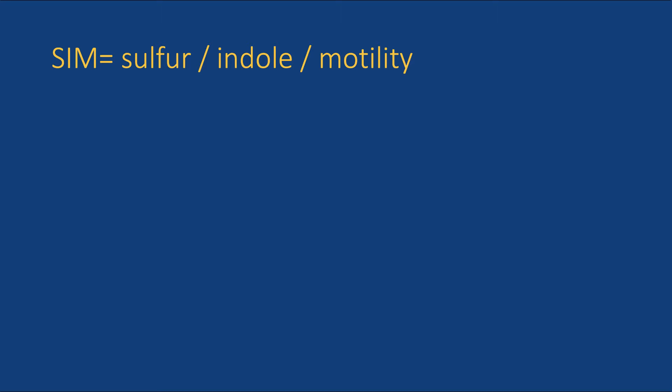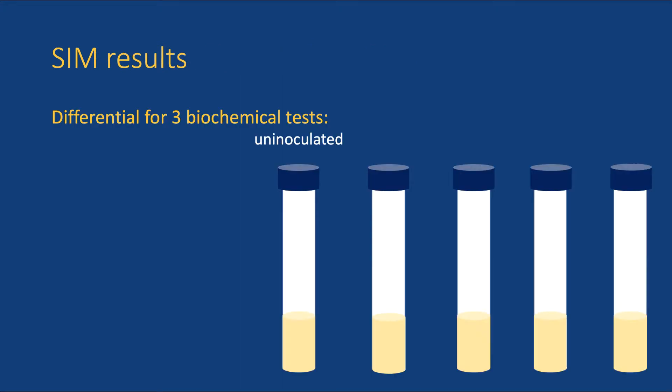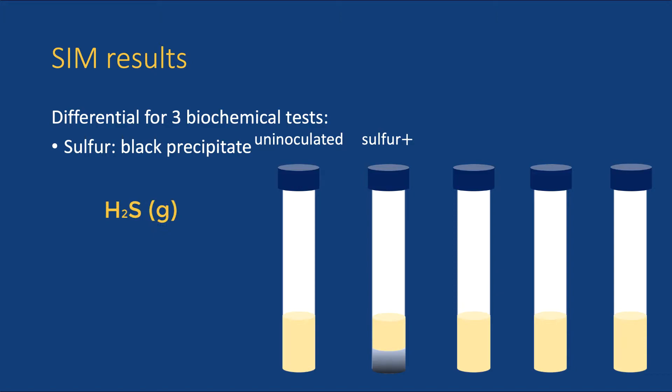SIM is actually differential for three biochemical tests. The S stands for sulfur, the I for indole, and the M for motility. Some bacteria can use sulfur as the final electron acceptor during anaerobic respiration. When it takes up these electrons, sulfur is reduced to form hydrogen sulfide, which is a gas — a stinky gas. It smells like rotten eggs.